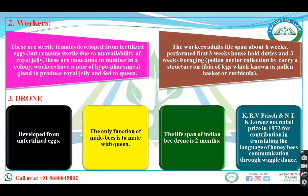Workers are sterile females, also developed from fertilized eggs. They remain sterile due to the unavailability of royal jelly. Drones are developed from unfertilized eggs. The only function of a drone is to mate with the queen, and the lifespan of the Indian bee drone is two months.